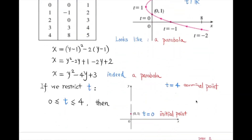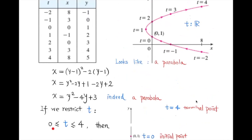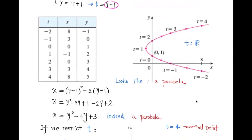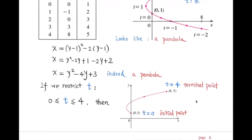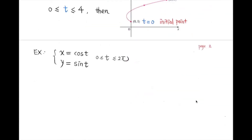We can also restrict t — for example, let t go from 0 to 4. That gives us only part of the parabola, starting at the initial point (when t = 0) and ending at the terminal point (when t = 4). When t is restricted to [0, 4], the parametric curve has a defined initial point and terminal point.